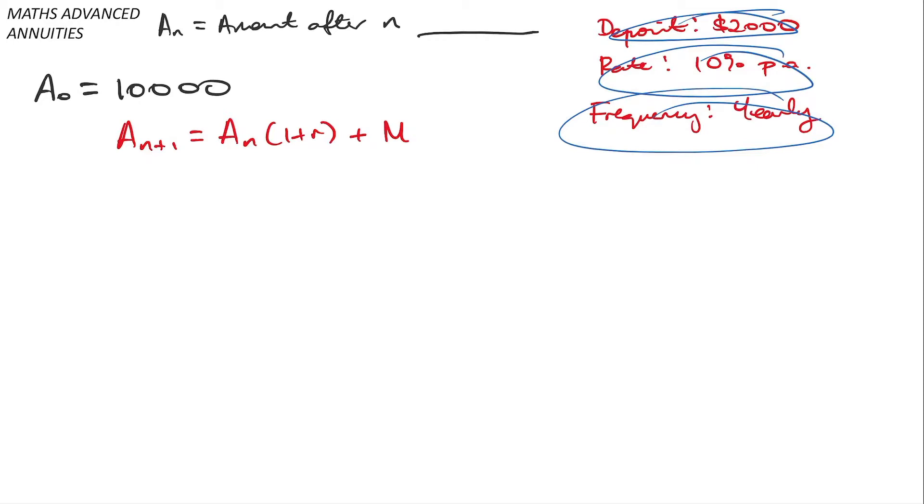Now, the idea is that when setting up such a problem, we introduce this A_n notation. And A_n is going to measure the balance after n something. But the question is, what is that something? As it turns out, that something is actually entirely dependent on the frequency. And because I'm dealing with a yearly frequency, I'll let A_n be the amount after n years.